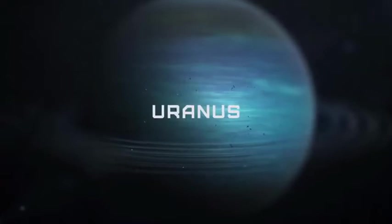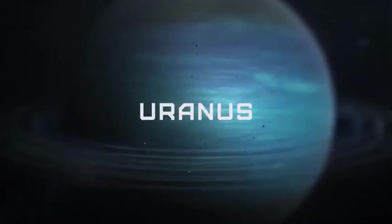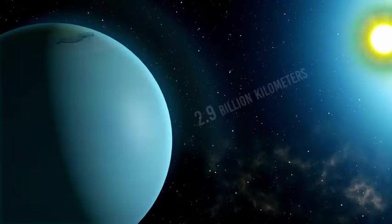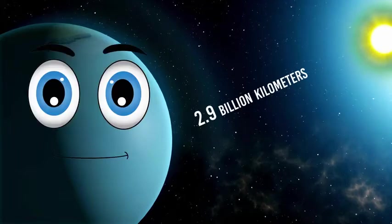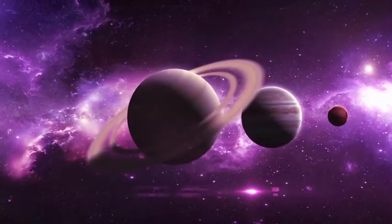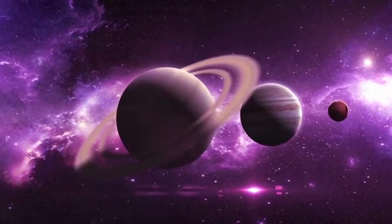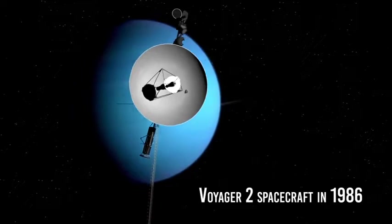Uranus has had a tough time in the reputation stakes over the years. Its name alone is the source of many jokes. The fact that it's so far away from the Sun, 2.9 billion kilometers, is one of the reasons it has been so lonely and misunderstood. Unlike its flashy siblings Jupiter and Saturn, Uranus has only had one visitor, a brief flyby by the Voyager 2 spacecraft in 1986.